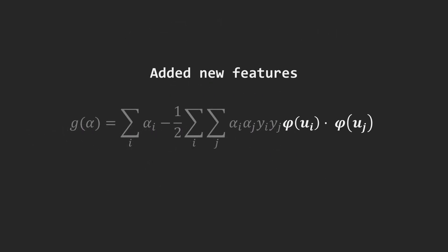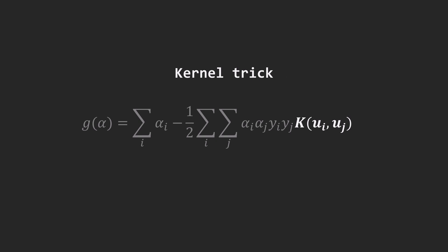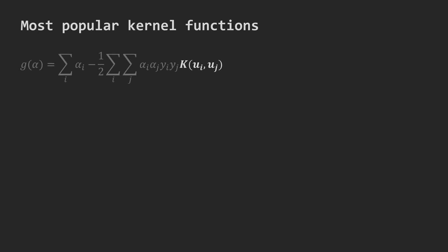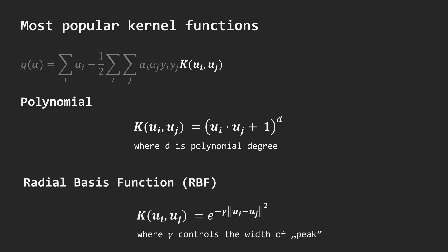And just to remind once again where we use this kernel trick: to find the widest possible margin, the SVM algorithm maximizes a dual function. Originally, the dual function in the SVM formulation involved expensive computations in higher-dimensional space. The kernel trick replaces this by calculating a kernel function directly in the original lower-dimensional space, significantly reducing computational time. Not every function can serve as a kernel, but common kernels include polynomial kernels with adjustable degrees – we used a second-degree polynomial for the XOR problem – and the radial basis function, RBF, controlled by the gamma parameter.